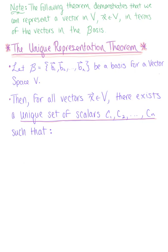The following theorem demonstrates that we can represent a vector in the vector space in terms of the vectors of our basis. We describe this with the unique representation theorem. We begin by letting our basis b be defined by the vectors b sub 1 through b sub n, and this is a basis for some vector space v.